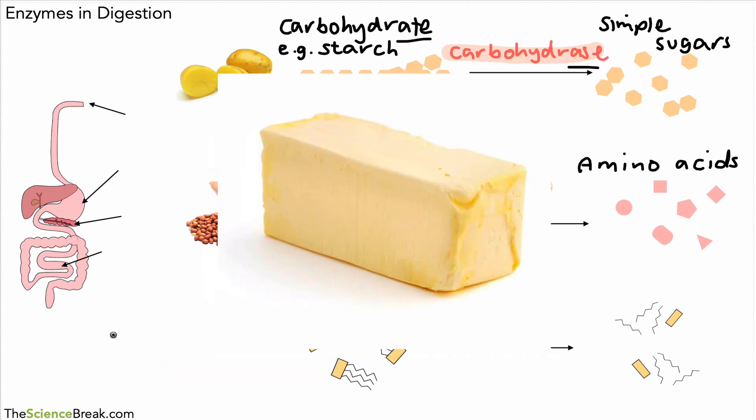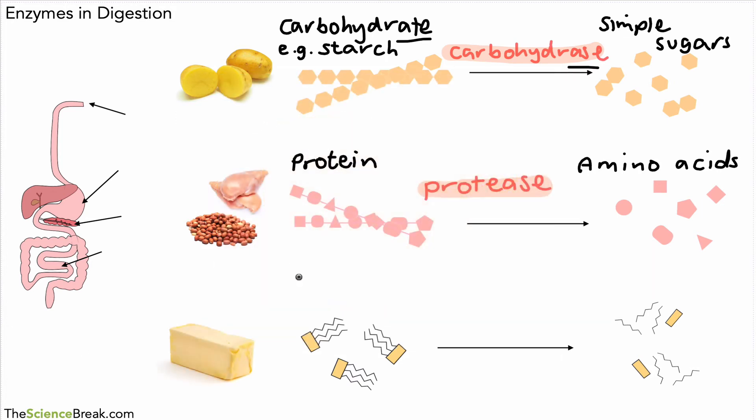The last one we want to look at is digestion of fat. There's some butter, which is an example of something that might contain fat, and this is also broken down by enzymes as well. We have our lipids here, so this is a simplified version of lipid molecules. These are the fats and oils which we've discussed before. Lipids are fats and oils, and these are broken down by enzymes called lipase enzymes.